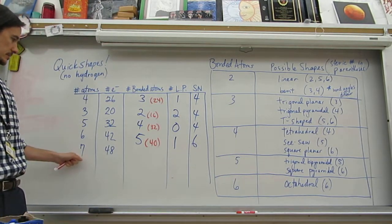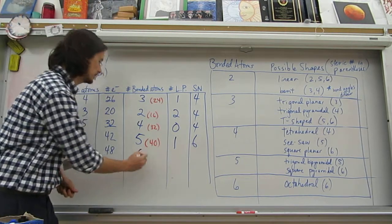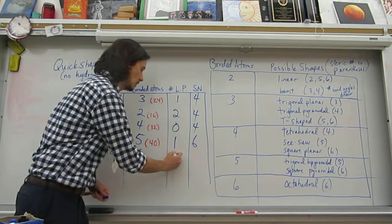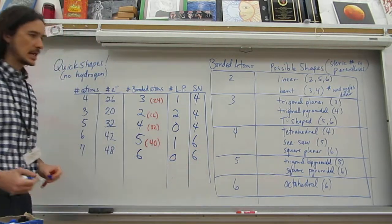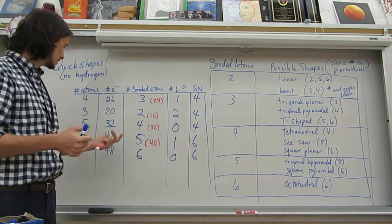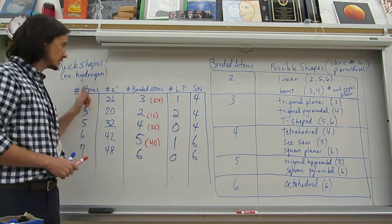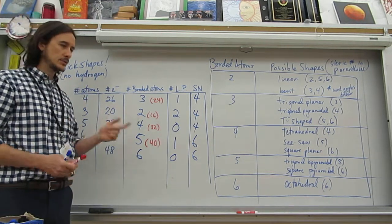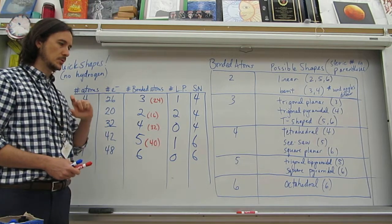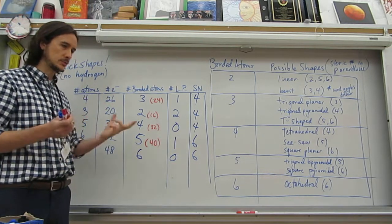Last one is 7. This one might be obvious. We have six bonded atoms. Six times 8 is 48. No lone pairs. Steric number 6. That's octahedral. So that's how to quickly do it. Again, this is without any hydrogen. With hydrogen, you just have to remember it doesn't form octets. It's just the two electrons or a duet.